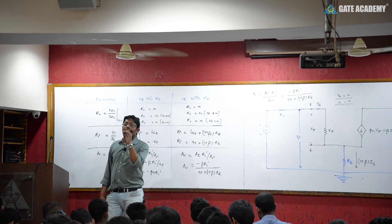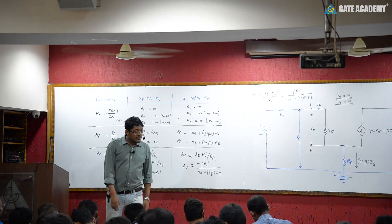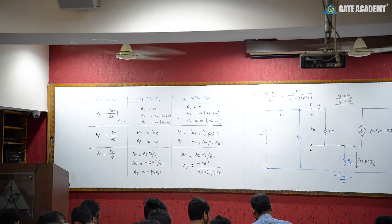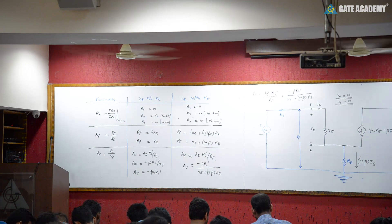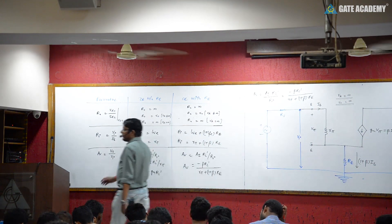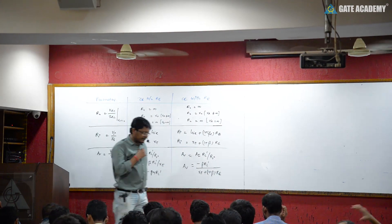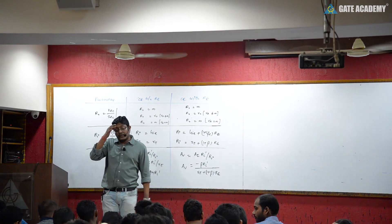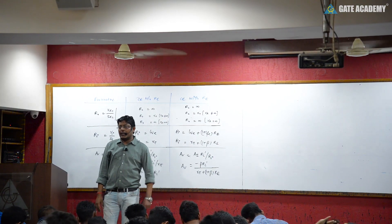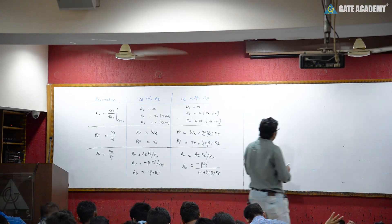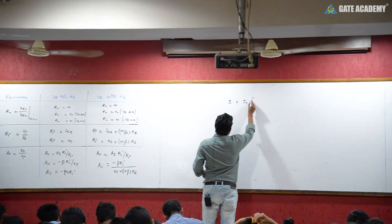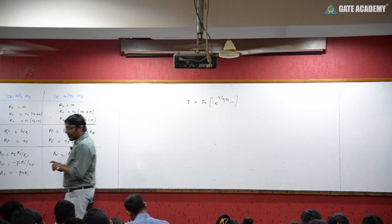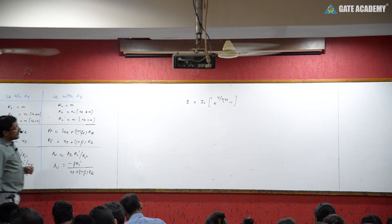AC Resistance or Dynamic Resistance of Diode. The forward bias diode current is given by I equal to I₀ times e raised to power V upon eta Vt minus 1. This is the diode equation. For forward bias, the current is approximately I equal to I₀ times e raised to power V upon eta Vt.